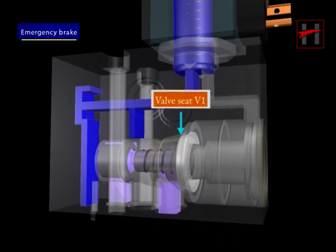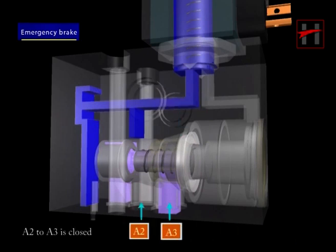The valve seat V1 is closed and the path of control pressure from port A2 to A3 is closed.